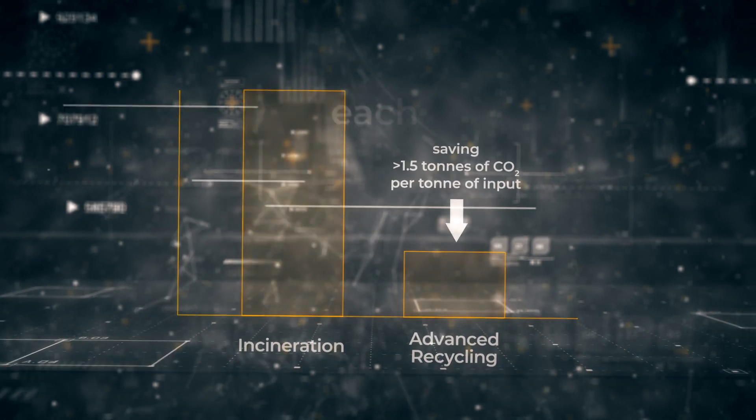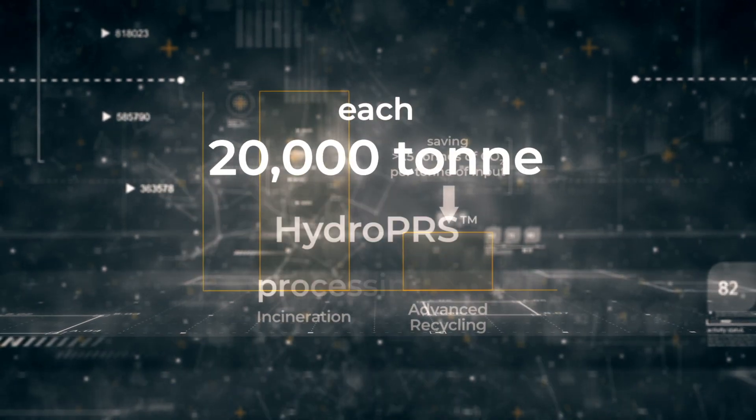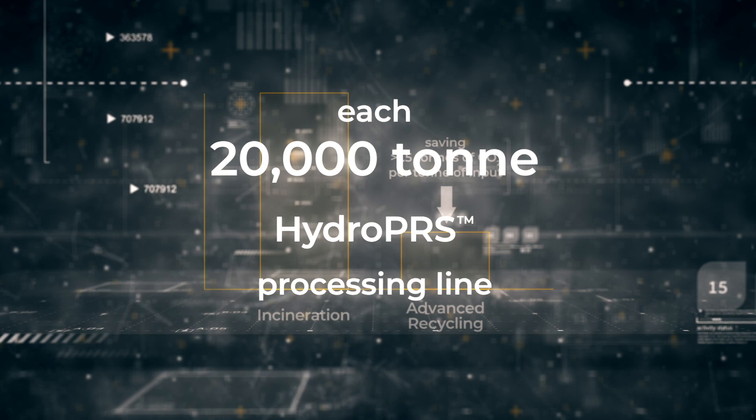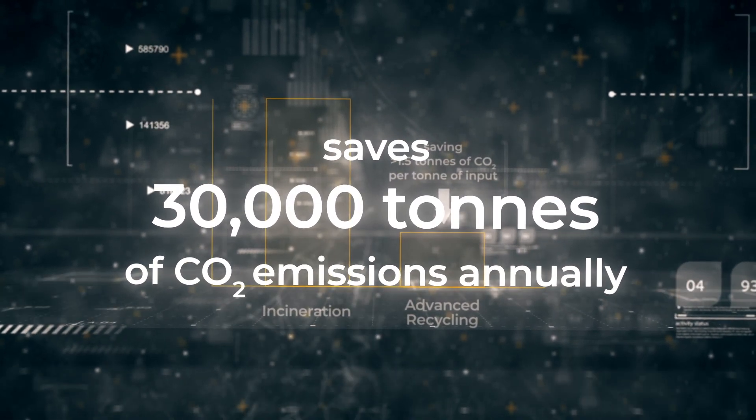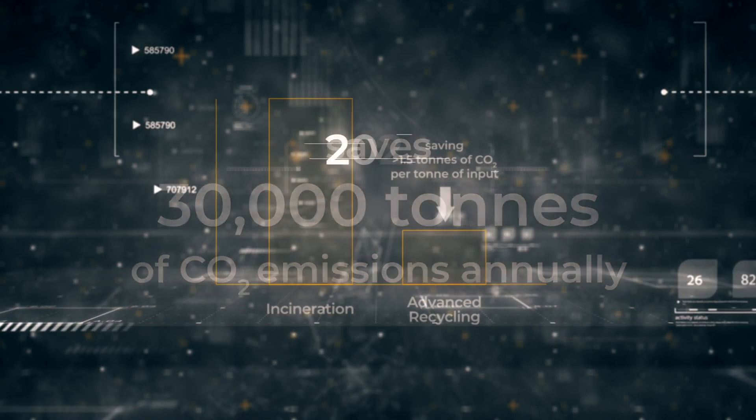This means that each 20,000 tonne Hydro PRS processing line could save approximately 30,000 tonnes of CO2 emissions annually when compared to the incineration of plastic waste. By 2025,